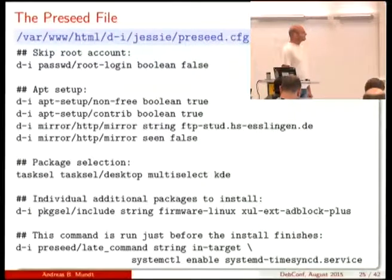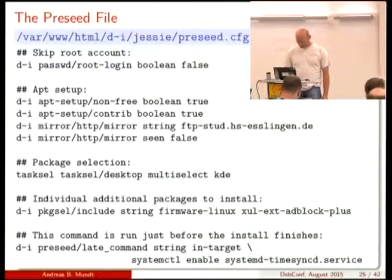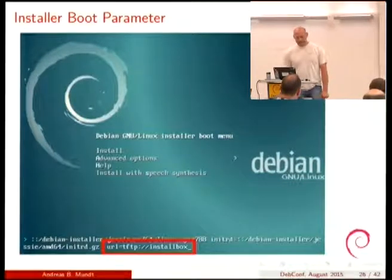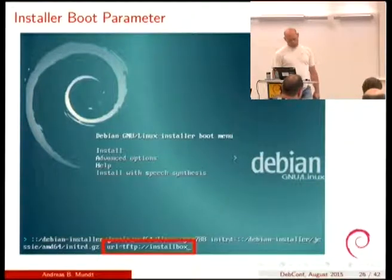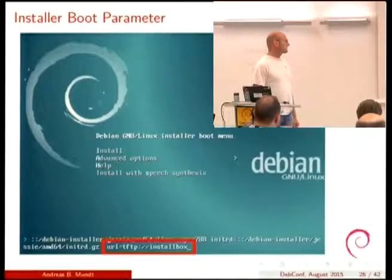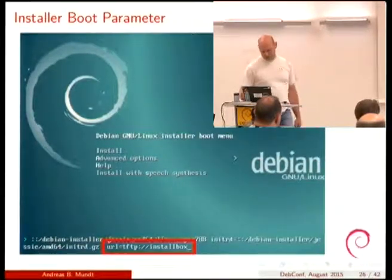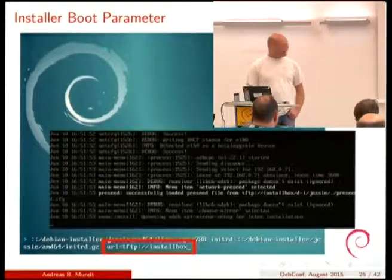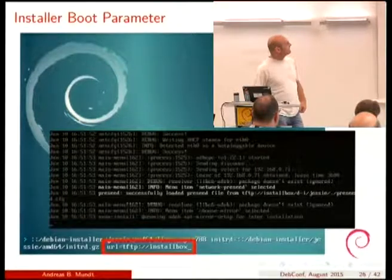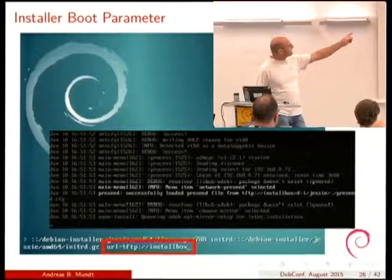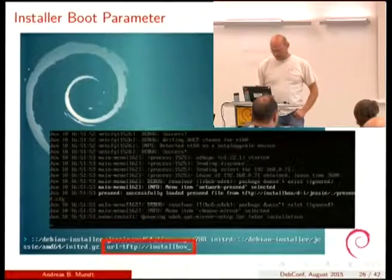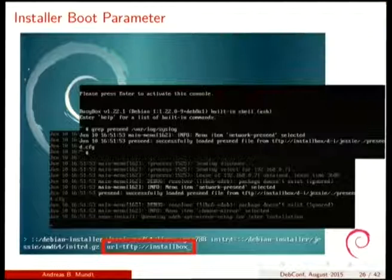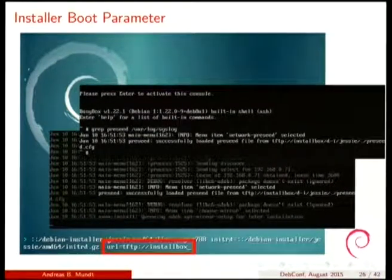We choose a mirror close to the village, and we use KDE because that's what people expect when coming from the Windows world. We add a few extra packages: uBlock Origin is useful, some firmware, and we switch on the time service. To tell the installer to use that file, we add a parameter to the boot line. With this setup it's as simple as 'url=tftp://installbox'. When we install with that boot line we find in the log lines like 'preseed successfully loaded preseed file', and then you know everything works. You can also verify by running 'grep preseed /var/log/syslog'.